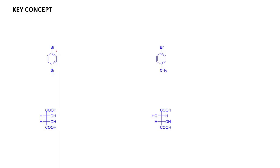For example, if we consider 1,4-dibromobenzene, we can see it contains a horizontal plane of symmetry as well as a vertical plane of symmetry. Because of this symmetry, certain carbons become equivalent to each other. The number of distinguished carbons we get here is two: one bromine-attached carbon and one CH carbon. So we see only 2 peaks in the 13C NMR spectrum of this compound.